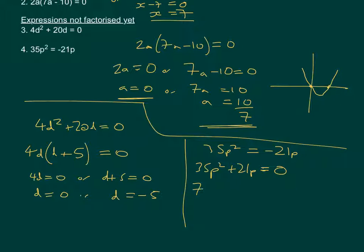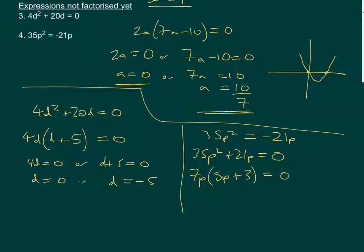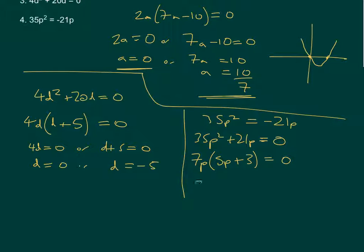Now I can factorise, I can take out 7p, and I'm going to be left with (5p plus 3) equals 0. And then we just need to finish off, so either 7p equals 0, or (5p plus 3) equals 0. So p equals 0, or 5p equals minus 3, in which case p equals minus 3 over 5. So you get two answers there again.